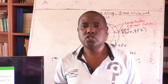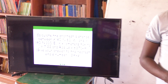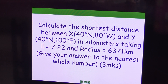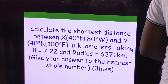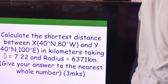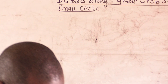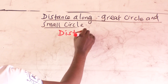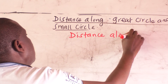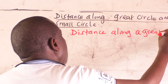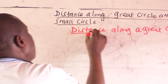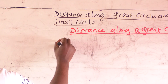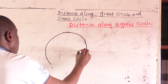Individual latitudes could have their own radius that will be given or we'll be able to find. If you want to find distance along a great circle, here is how to go about it. We want to find the distance along a great circle. This is our globe, our earth.